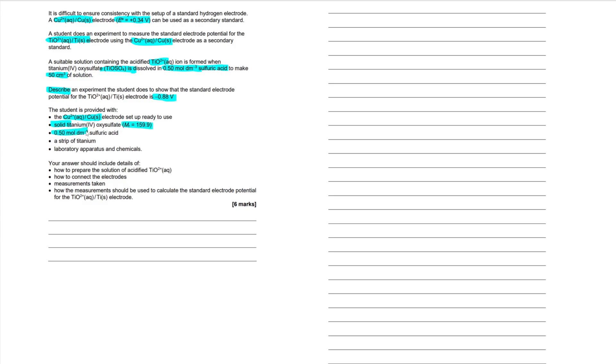We've got a bunch of data: the student is provided with a copper 2+ / copper electrode, solid titanium oxysulfate with an MR value, 0.5 mol per decimetre cubed sulfuric acid, a strip of titanium, lab apparatus and chemicals. Your answer should include: how to prepare the solution, how to connect the electrodes, measurements taken, and how the measurements should be used to calculate the standard electrode potential. Really pay attention to these variables - if you want the top marks, you'll need to mention data and do calculations.